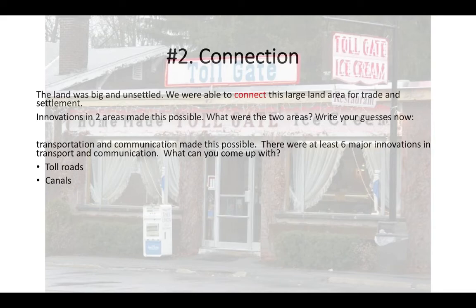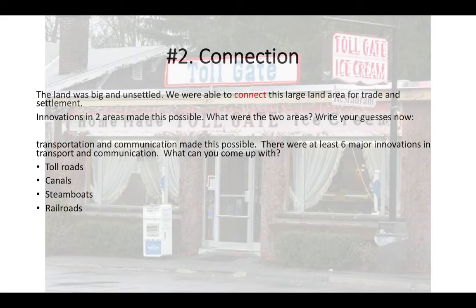Steamboats were very important for transporting people and goods along the riverways and the canals to a certain extent, although canals were generally narrower. Those were invented in the early 1800s by Robert Fulton. Railroads — there are actually two great periods for railroads. The later 1800s is when they really become important, but they are invented now and developing, so they do play a role here. An efficient postal system was also an innovation at this time, helping communication between regions. Then the telegraph gets invented and becomes very important quickly. Those are your six.